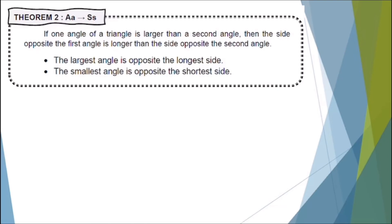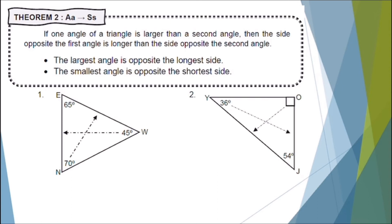For number 1, let's identify our shortest side. Our smallest angle is angle W, which is 45 degrees, and the side opposite to it is line segment EN. Therefore, our shortest side is line segment EN.